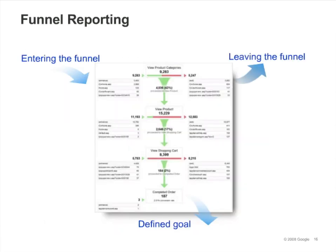If you define a funnel for a goal, Google Analytics populates the Funnel Visualization Report, shown here in the slide. On the left, you can see how visitors enter your funnel. On the right, you can see where they leave the funnel and where they go. The middle shows you how visitors progress through the funnel and how many of them continue on to each step. In this example, there were 9,283 entrances at the top of the funnel and 187 completed orders at the bottom. This report is very useful for identifying the pages from which visitors abandon your conversion funnel.